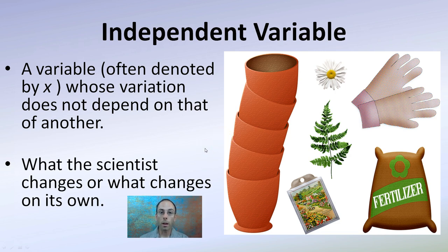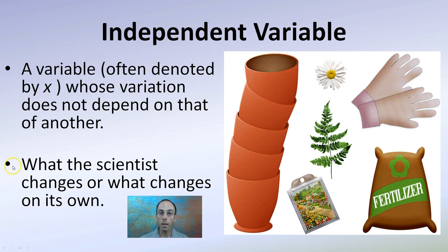Once we develop that, we want to look at independent and dependent variables. The independent variable is often denoted as x, and its variation does not depend on that of another. It's what the scientist changes, or what changes on its own. For example, if you're looking at growing a plant, the independent variable could be the amount of fertilizer added.